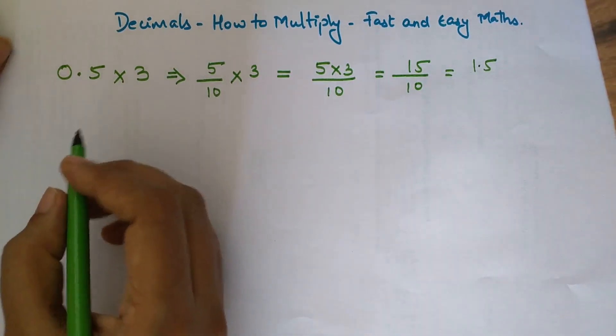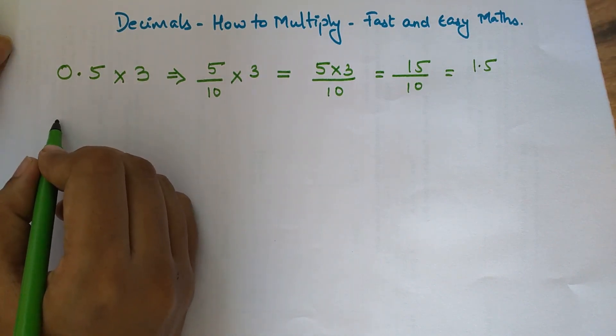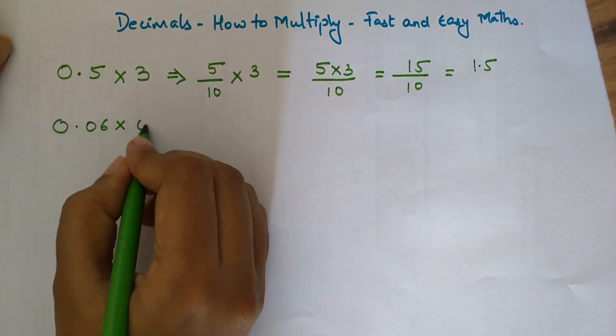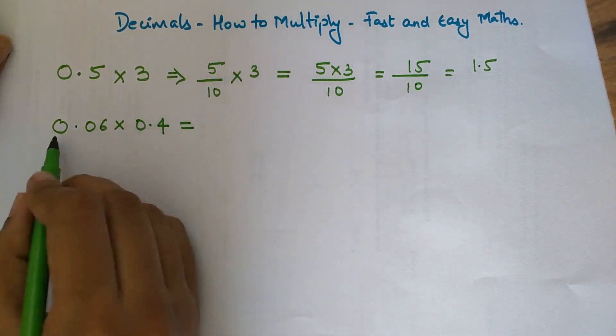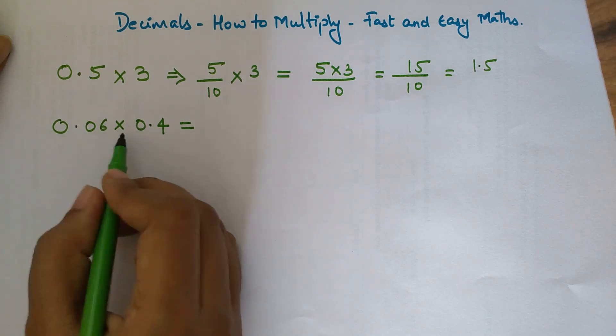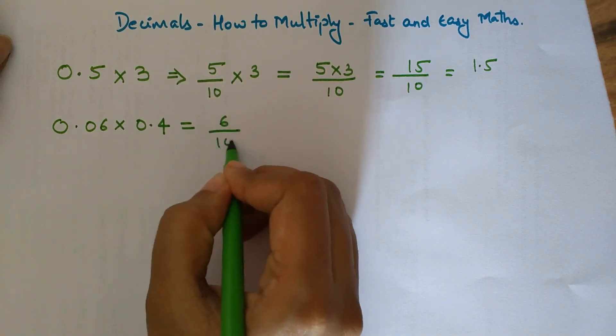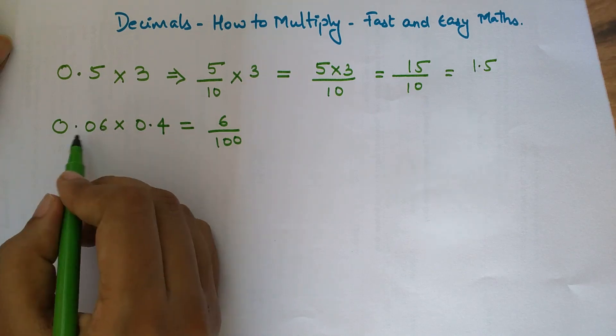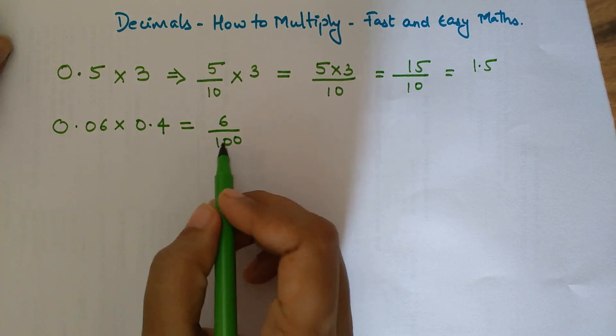Now let's look at another example: how to do multiplication of 0.06 into 0.4. We will convert both decimal numbers into fractions. 0.06 will be written as 6 upon 100 because it has two digits after the decimal point. The number of digits represents the zeros, and the decimal point represents the 1.